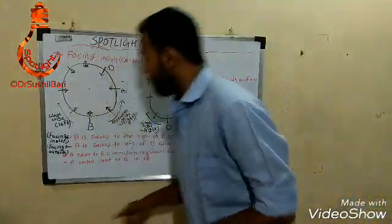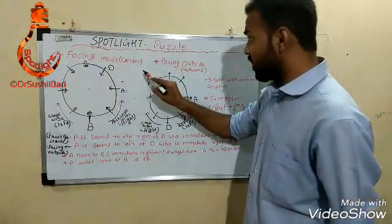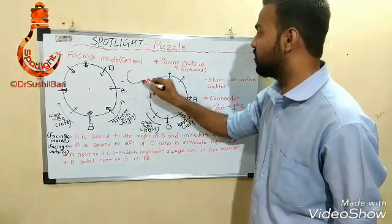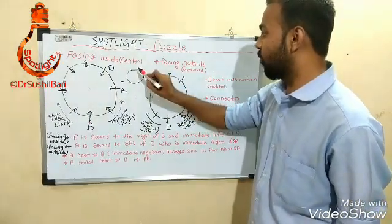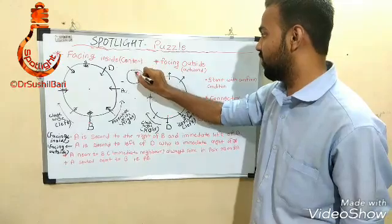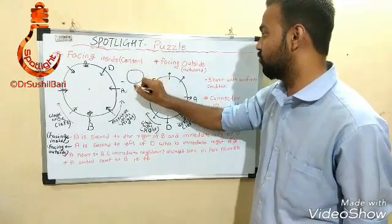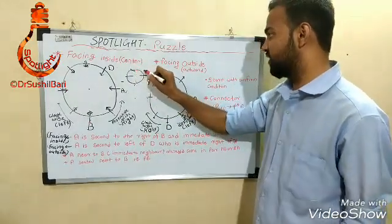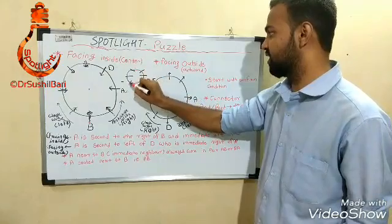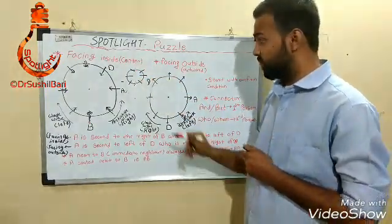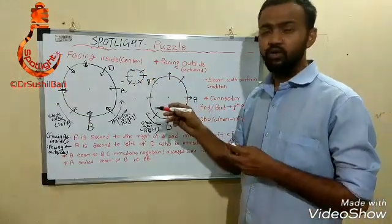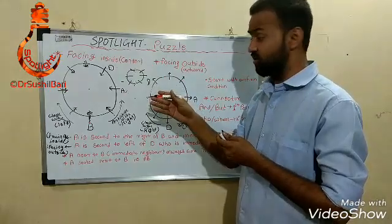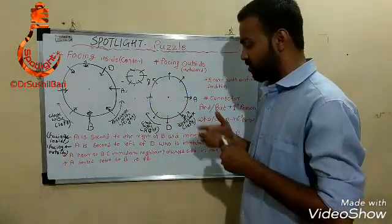If eight persons are sitting, draw the puzzle in a proper way — positions one, two, three, four, five, six, seven, eight evenly spaced around the circle. This is the correct method to draw the eight-person sitting circular arrangement.